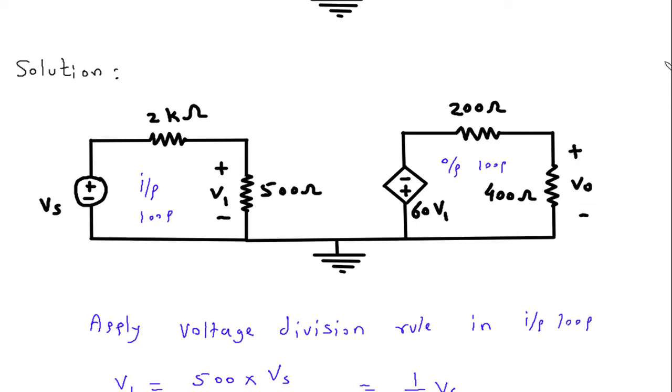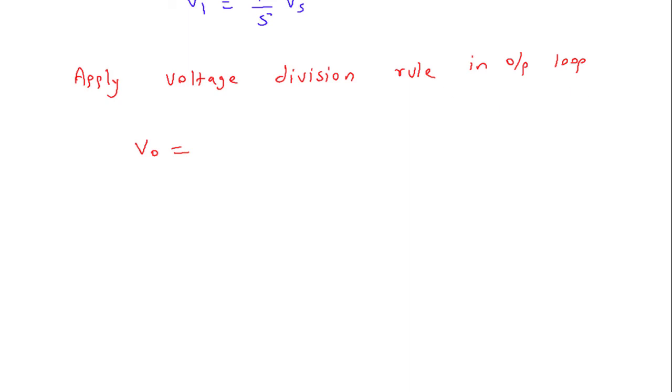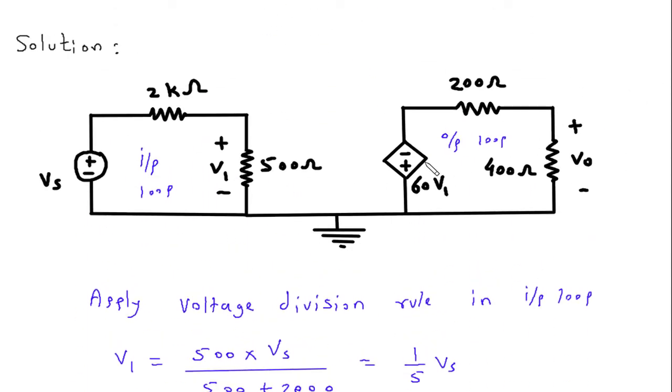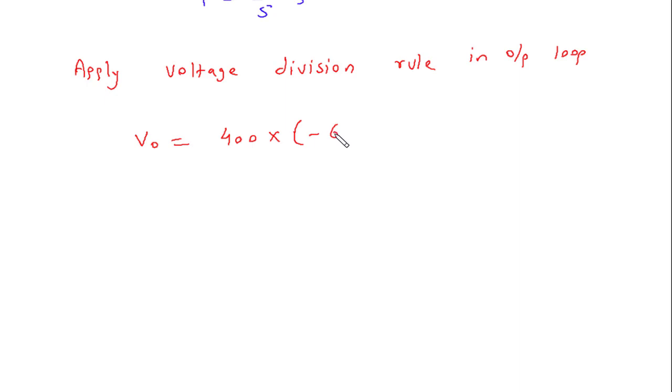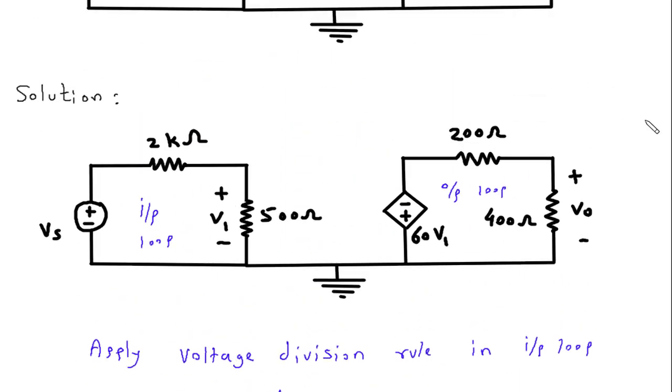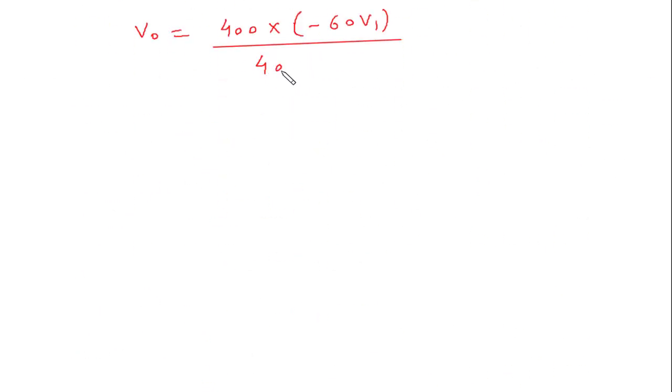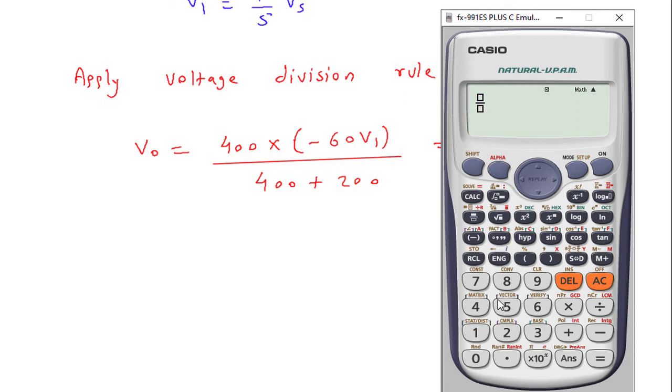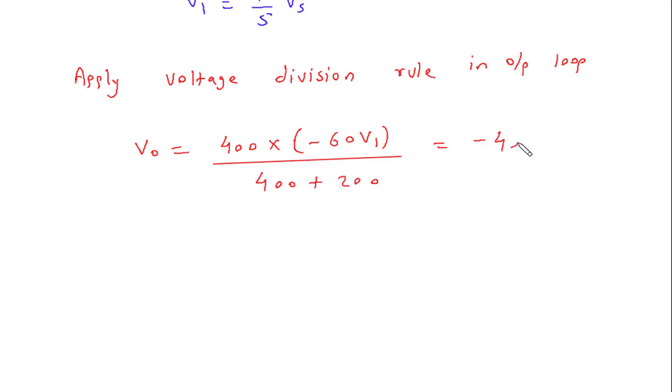So here we will take this Vo. Vo is equal to 400 into, voltage is, the polarity is opposite. So this will be minus 60V1, minus 60V1 by 400 plus 200, 400 plus 200. Minus 40V1, so Vo is equal to minus 40V1.